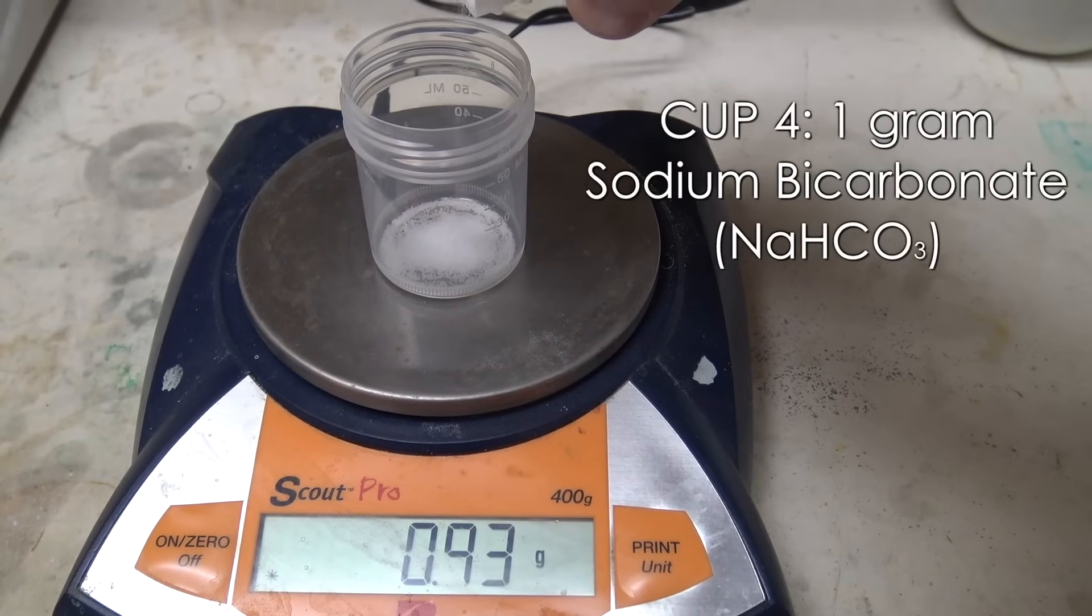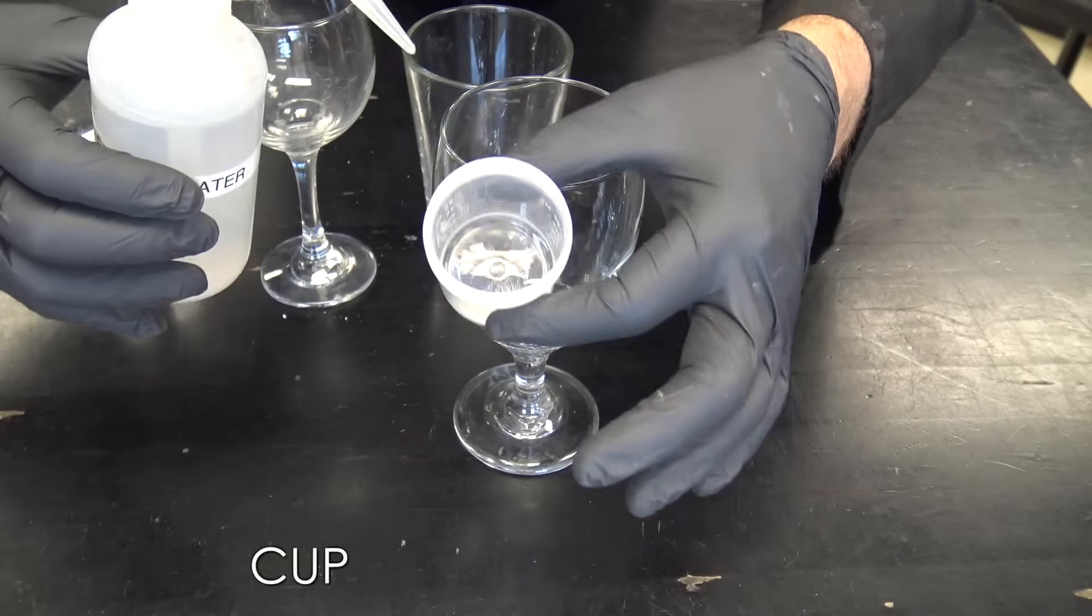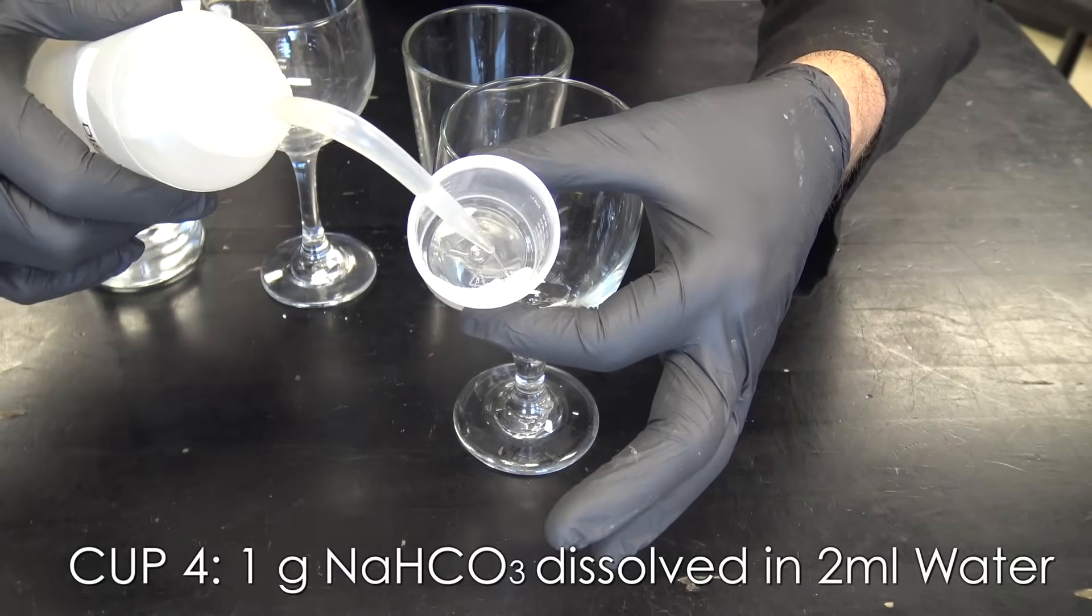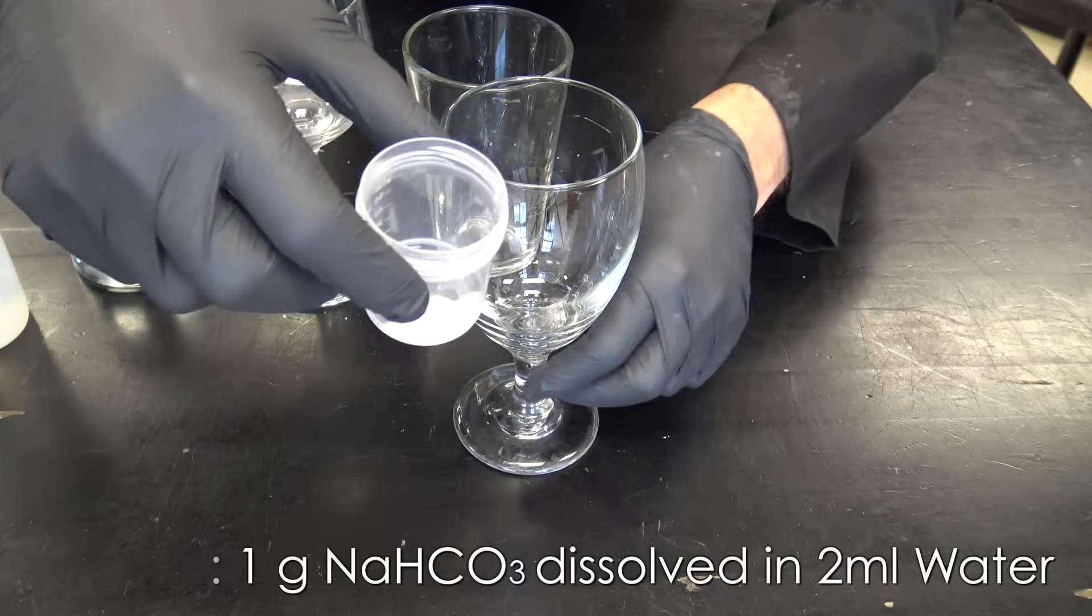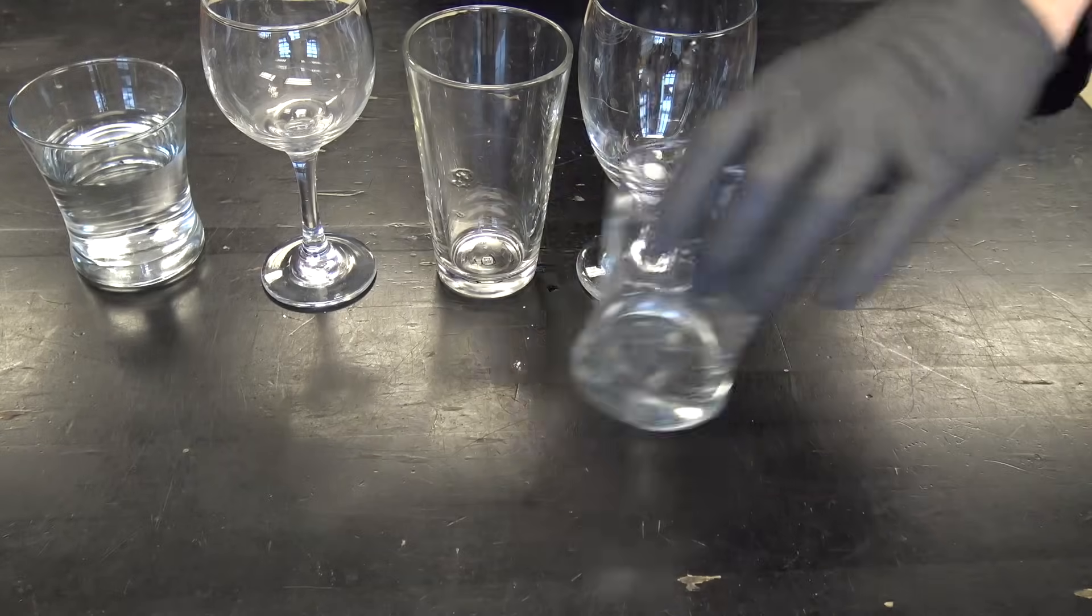In the next one, we're going to measure out one gram of sodium bicarbonate. You might know that as baking soda. Same thing. But we're going to dissolve that with just a little bit of water, about two milliliters, so we'll get a good reaction. Dump that in the bottom of that cup.